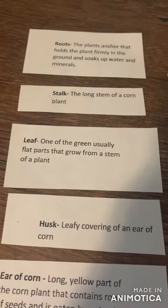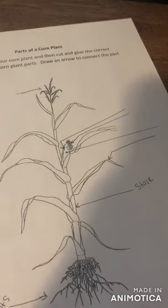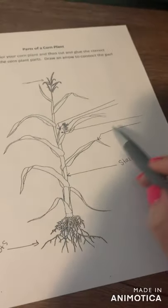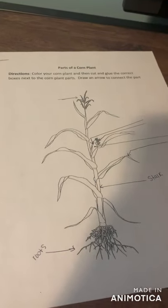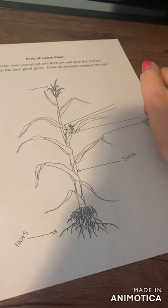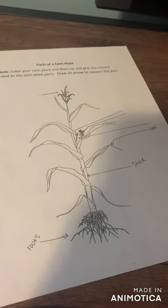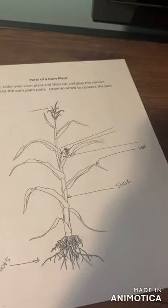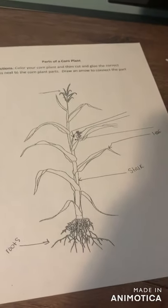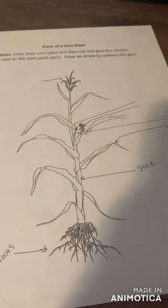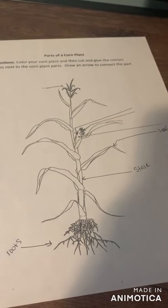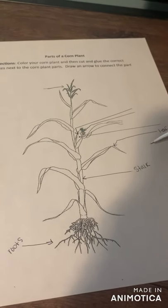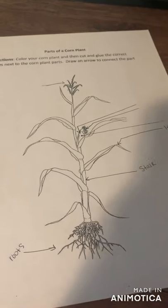The next one on the list are the leaves. I drew my arrow to this leaf right here, but all of these are the leaves on the plant. The same as our soybean plant, the leaves on the corn plant have many functions, but the main one is to bring in sunlight and help create food for the plant to grow.